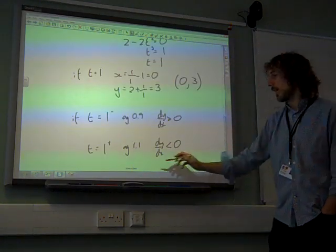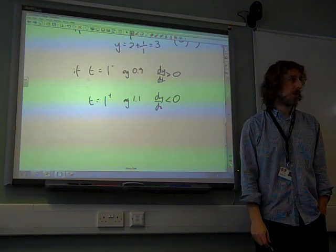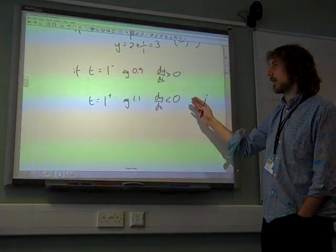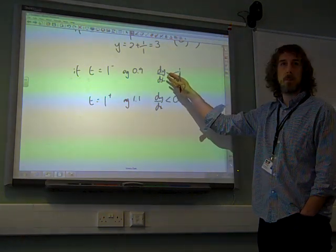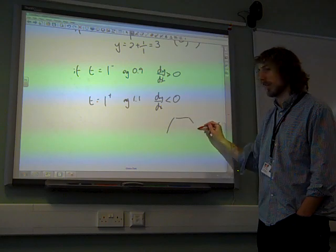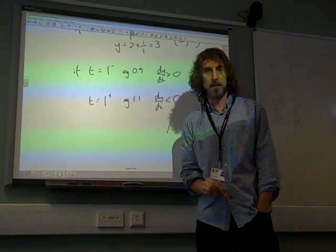Right. Now, the danger here is we think we've gone from less than 1 to 1 to greater than 1, and we've gone positive to 0 to negative. So positive to 0 to negative. So we're going to conclude it's a maximum.